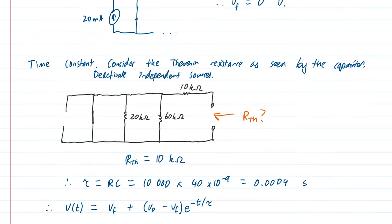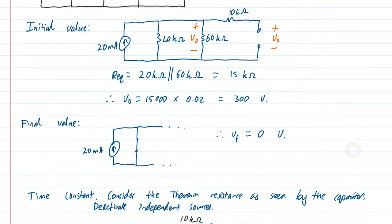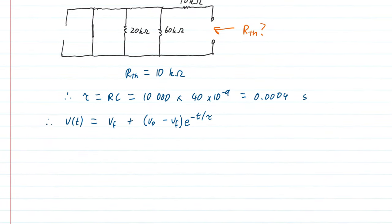We substitute in our values. Our final voltage is 0. Initial voltage was 300. E to the negative T divided by our time constant. So this tidies up: that's 300 E to the negative T divided by 0.4 milliseconds. And there we have it.